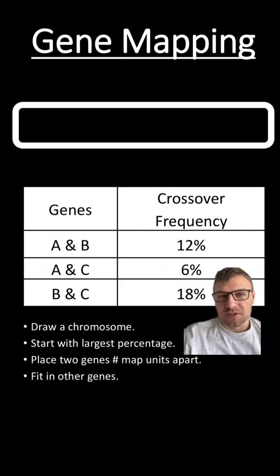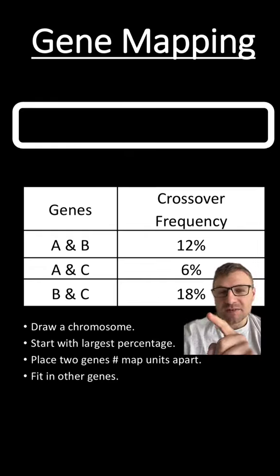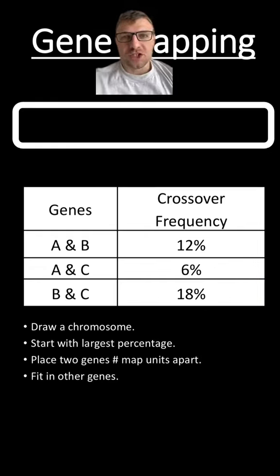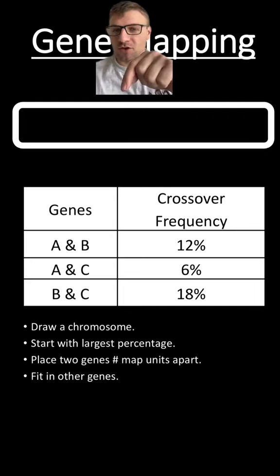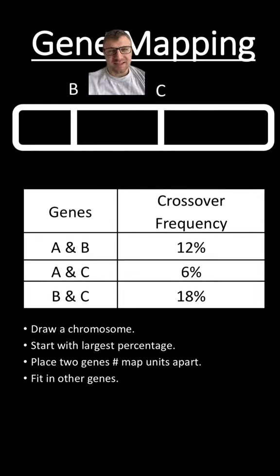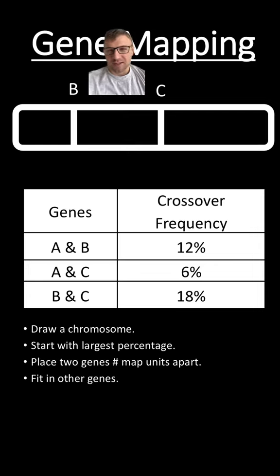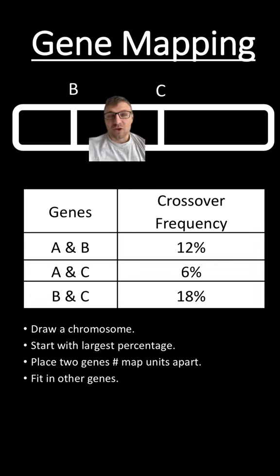Now we're going to start with the largest percent, which is B and C, and it's 18%. We're going to place the genes B and C around 18% away from each other on this chromosome. It should look something like this. This doesn't need to be perfect because we're just mapping these out using the crossing over frequency. You can also write this C and B — it doesn't matter which way you put it.